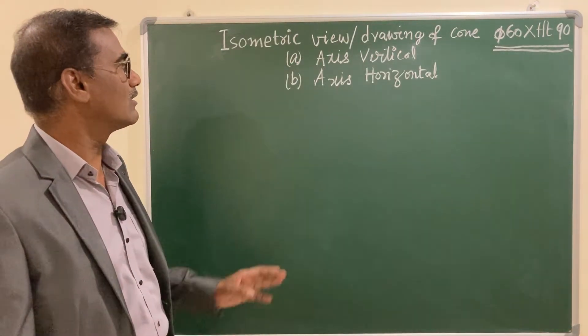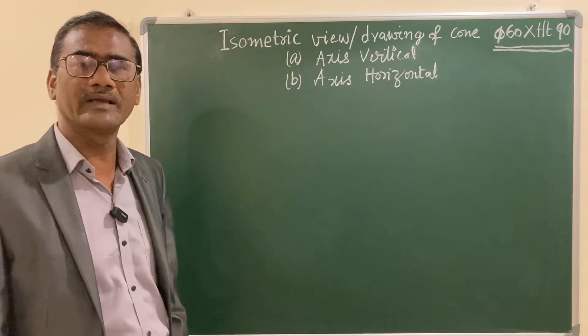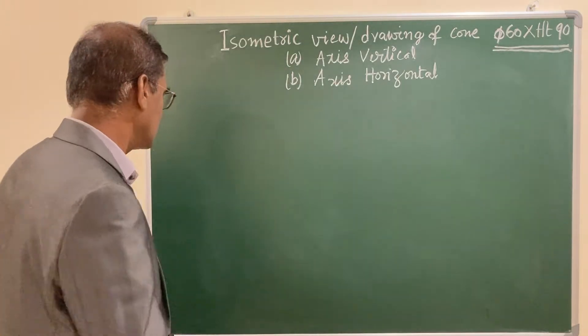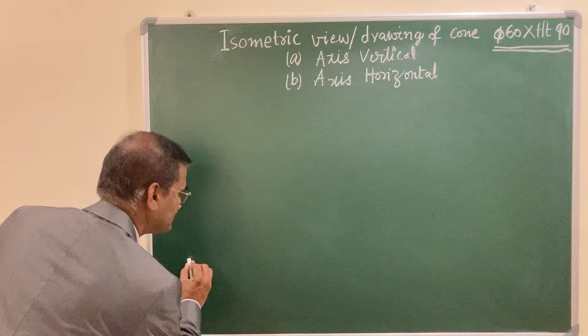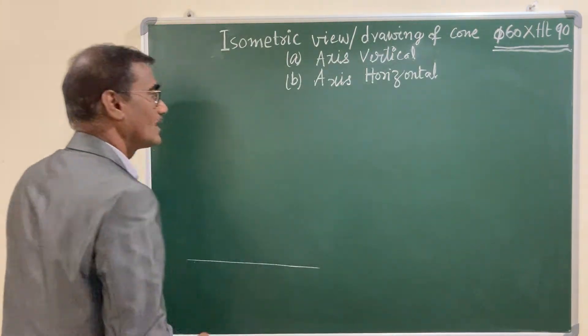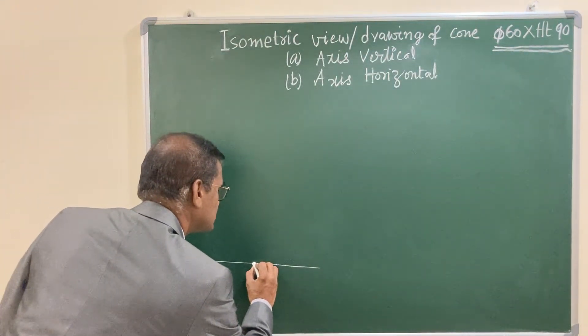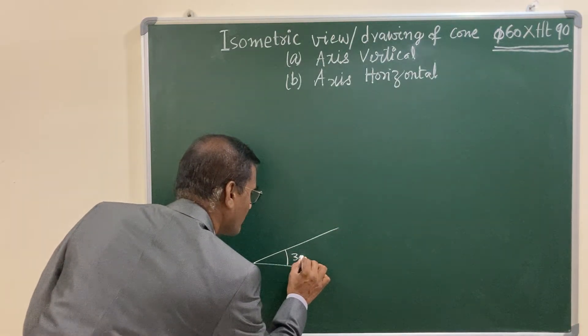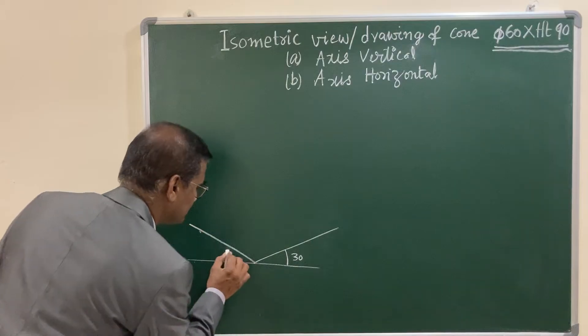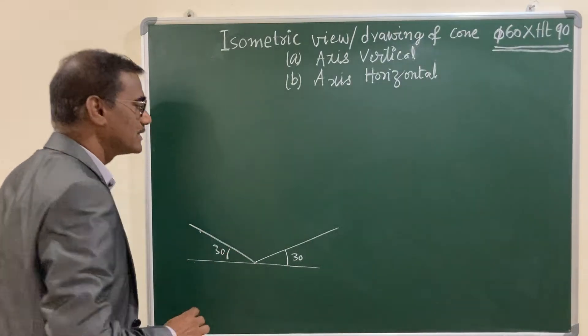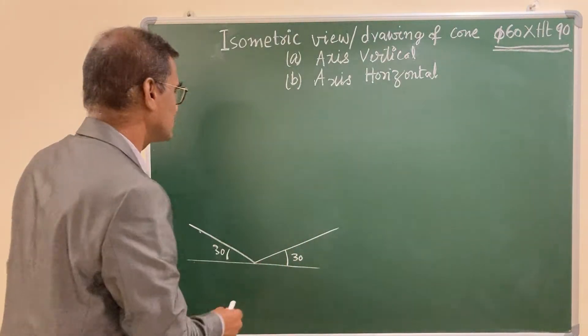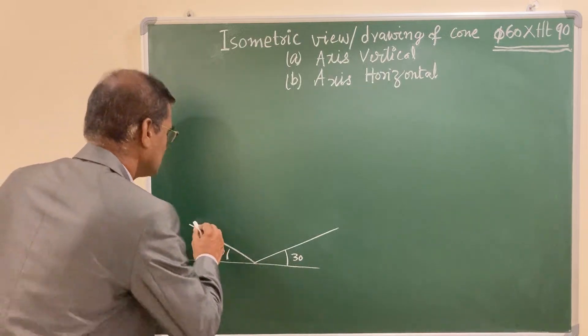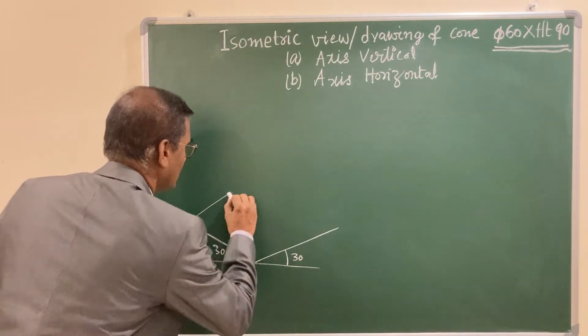Let us solve part A, that is keeping axis vertical. For that, let us draw a horizontal line. To the right of it is at an angle 30 degrees, and to the left it is 30 degrees. Complete the parallelogram with the diameter, that is 60 mm. So let us complete the parallelogram with the dimensions 60 mm.